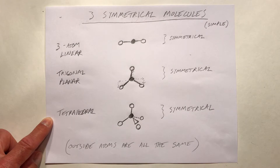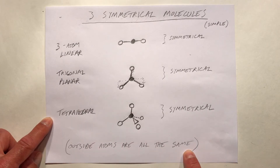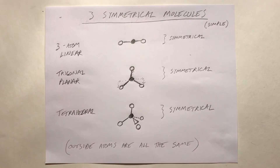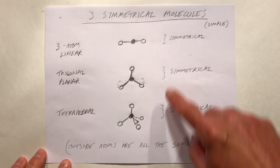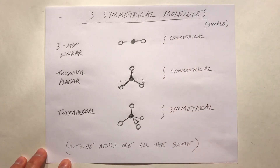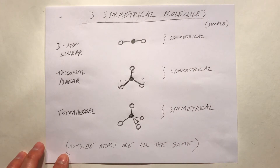For these structures to be symmetrical, the outside atoms would all have to be the same. There can be a few more symmetrical structures, but these are the symmetrical structures we run into most often.